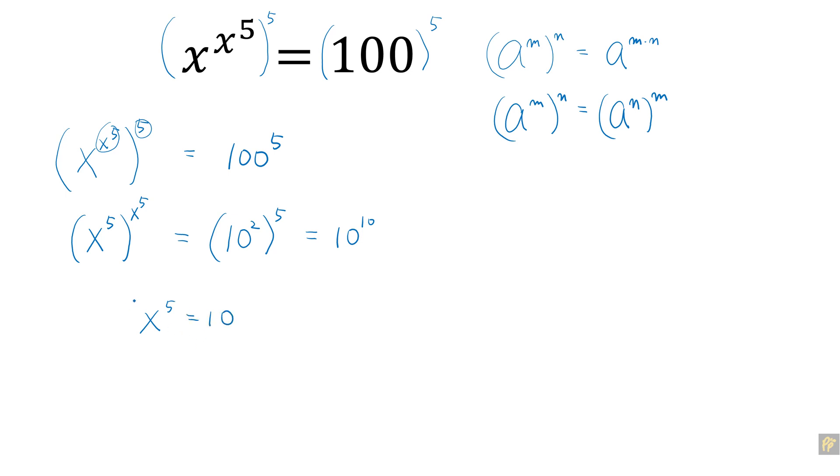To solve for x, raise both sides to the power of 1 over 5. The left-hand side becomes x, and the right-hand side becomes 10 to the power of 1 over 5, or the 5th root of 10.